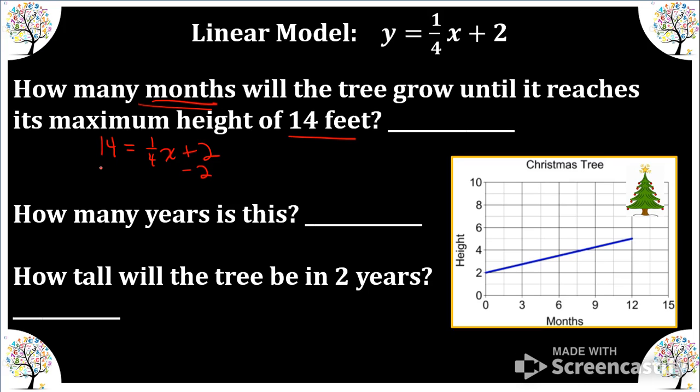So we're going to isolate x. We're going to subtract two from each side. Then to undo this multiplication of a fraction, we're going to multiply by the reciprocal. And x equals forty-eight, so forty-eight months.